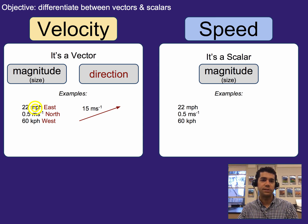With velocity, we have 22 miles per hour east, or 0.5 meters per second north, or 60 kilometers per hour west. Or you could even show 15 meters per second with an arrow like this to show the direction. Regardless, we've got that it is both size or magnitude and the direction.